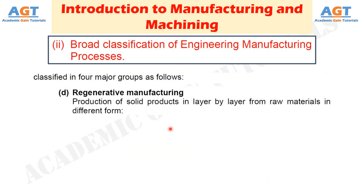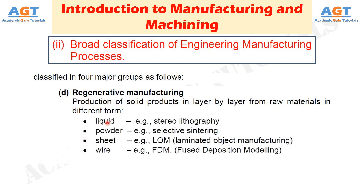And Number 4: Regenerative Manufacturing Processes. This includes the production of solid products layer by layer from raw materials in different forms — like liquid, for example, stereolithography; powder, for example, selective sintering; sheet, for example, laminated object manufacturing (LOM); and wire, for example, fused deposition modeling (FDM). Out of the aforesaid groups, regenerative manufacturing is the latest one, which is generally accomplished very rapidly and quite accurately using CAD and CAM for rapid prototyping and tooling.